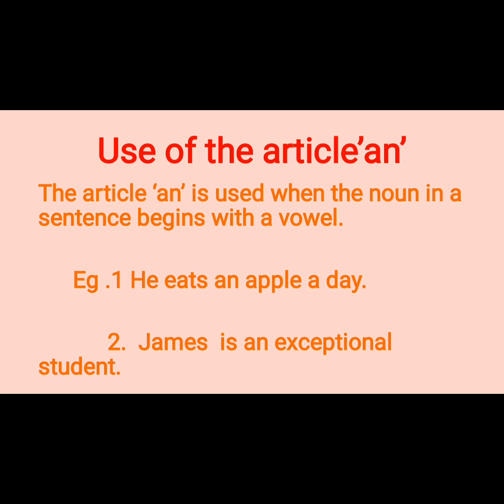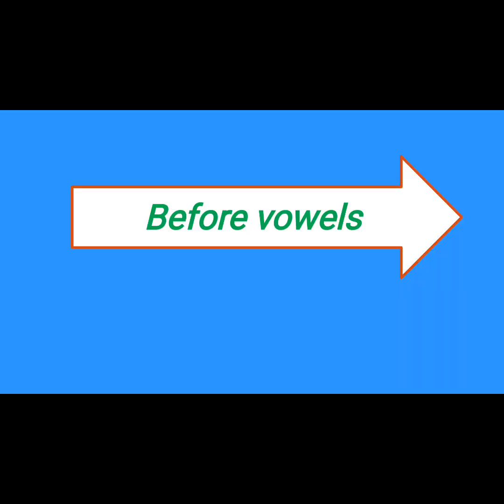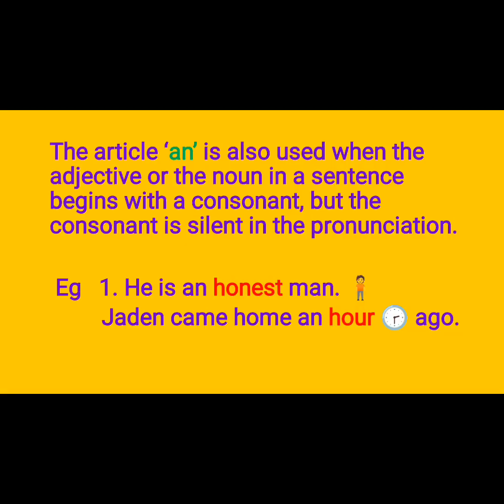The article an is used when a noun in a sentence begins with a vowel. For example: he eats an apple a day; James is an exceptional student. We know that A, E, I, O, U are vowels, so an is used before a vowel. The rest of the letters are consonants. Here is a flashcard which shows the vowels that the article an is used before.